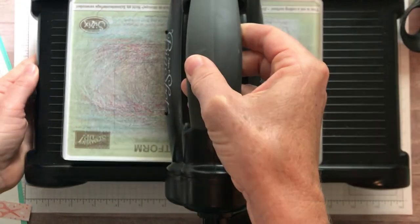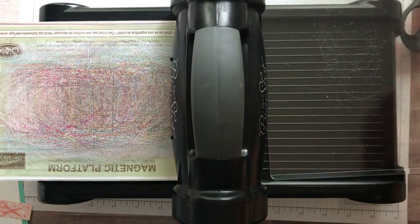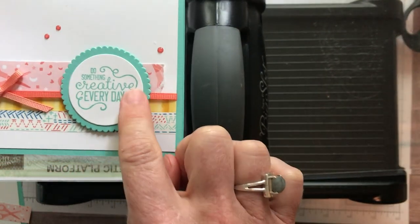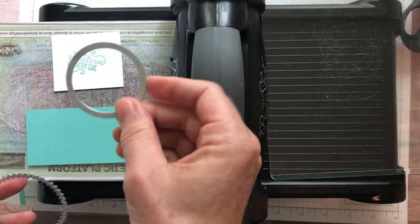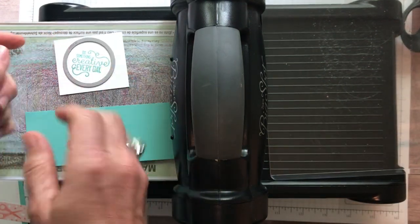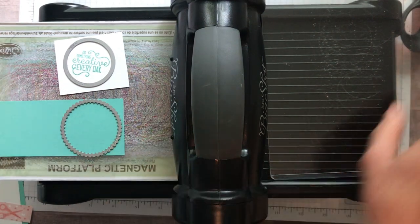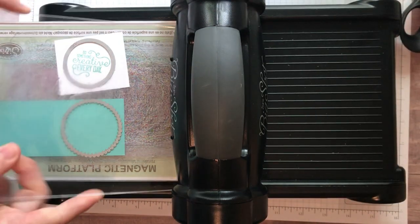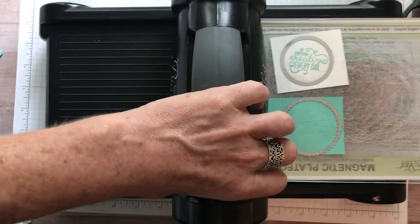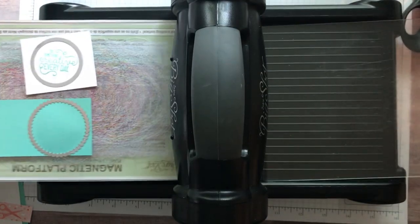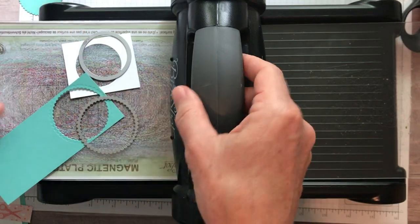I'm going to grab the Big Shot and set that right there so you guys can see. I'm using the Layering Circle Framelits, the Layering Circle dies. This is the third smallest straight edge circle and then the Scallop Circle is the fourth smallest in those packages. So I've got my magnetic platform, one clear cutting pad, then my paper and my dies and then my other clear cutting pad on top.